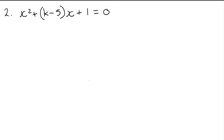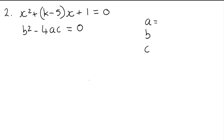This equation has equal roots and we have to determine the possible values of k. This is just a discriminant question. Equal roots means the discriminant equals 0. If it says real roots, you would do greater than or equal to 0, but this just says equal roots. I always write my a, b, c values down the side. So my a value is the coefficient of x squared, which is 1. The b value is the coefficient of x, which is k minus 5. And c is everything else, which is just 1.